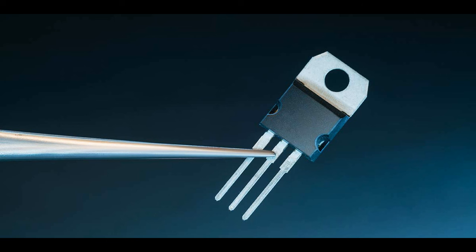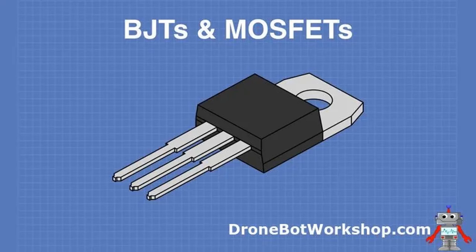Digital circuits are constructed by cascading multiple logic gates to perform complex operations, with MOSFETs providing the basic switching functionality needed for combining and processing binary information. MOSFETs are also used in more complex digital circuitry such as flip-flops and memory cells, enabling storage and manipulation of binary information. The versatility of MOSFETs allows for the creation of complex digital systems, from microprocessors and memory devices to ASICs used in a variety of electronic devices.